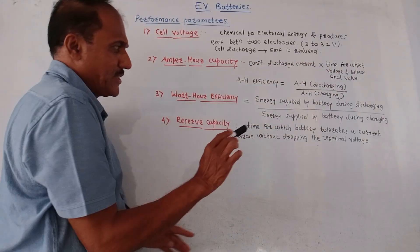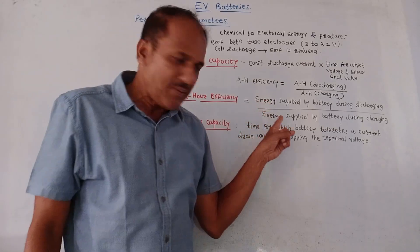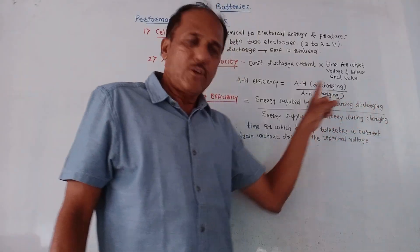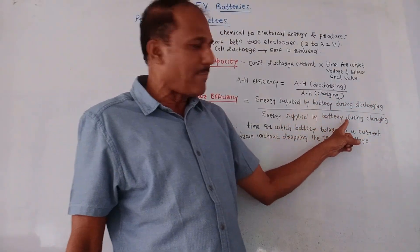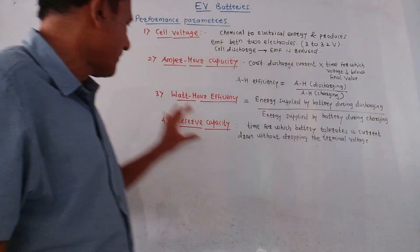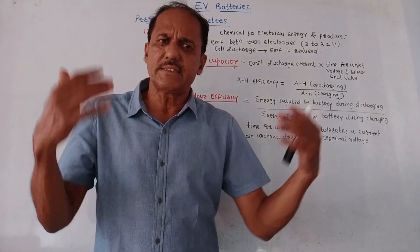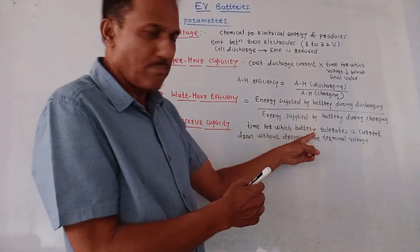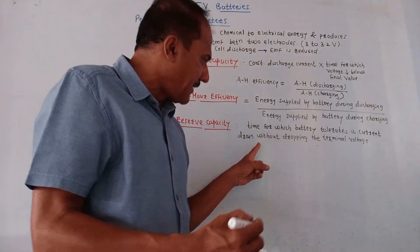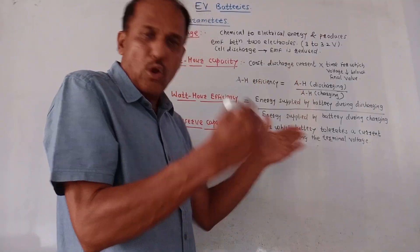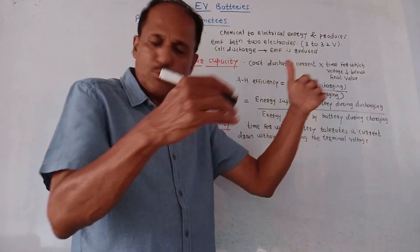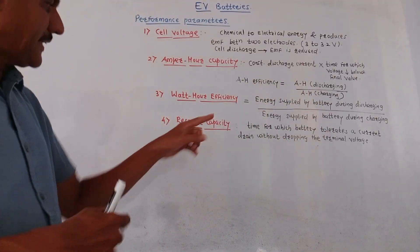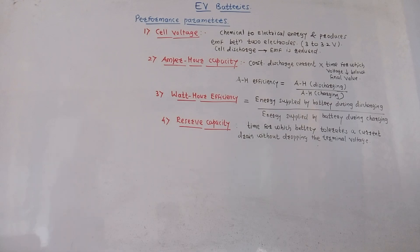Next is watt hour efficiency — the ratio of energy supplied by the battery during discharging to the energy supplied during charging. Next is reserve capacity — defined as the time for which a battery tolerates a current drain without dropping the terminal voltage. That is, without affecting the terminal voltage, how much current drain is possible is related to the reserve capacity of EV batteries.